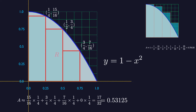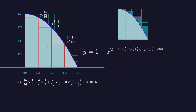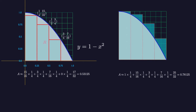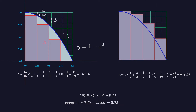The true value of A lies somewhere between these lower and upper sums, since the rectangles all lie inside the region R. The true value of the area lies somewhere between them, and here the error cannot be greater than the difference 0.25.